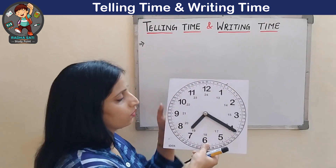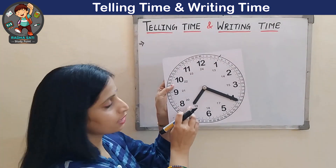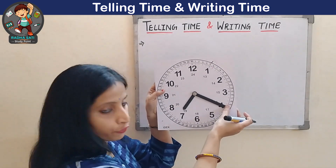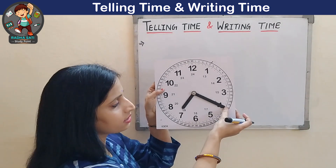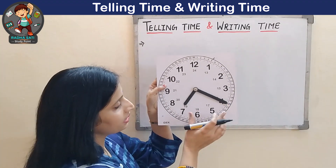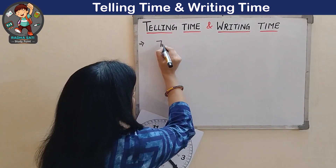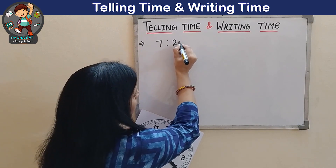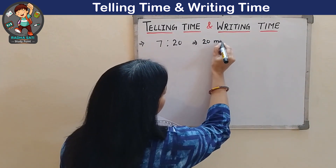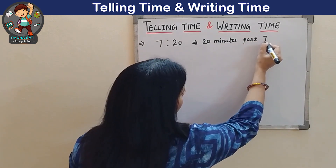Let's take an example. What is the time now? The hour hand is pointing towards 7, and the minute hand is at 4. 4 means — we do skip counting: 5, 10, 15, 20. So the time is 7:20. Or in words, we write 20 minutes past 7, because 7 hours have been passed.